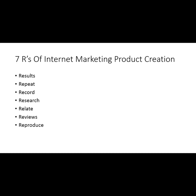Those are the seven R's of internet product creation. If you have those elements, you'll typically be able to create a successful information product — even if your graphics, copy, or list are lacking. You can generate results and sell people access to those results, teaching them how to get the same. You can have a successful information product.